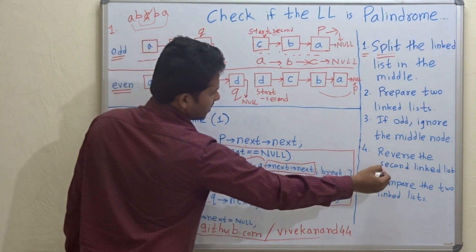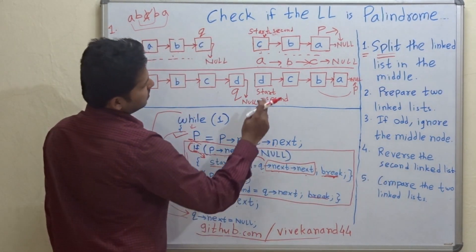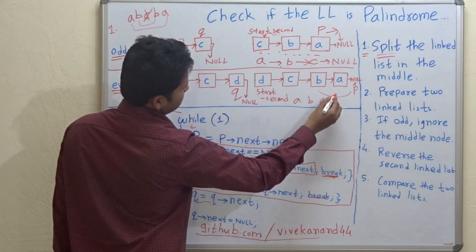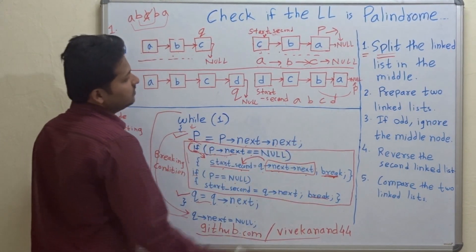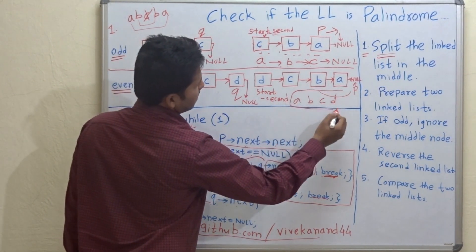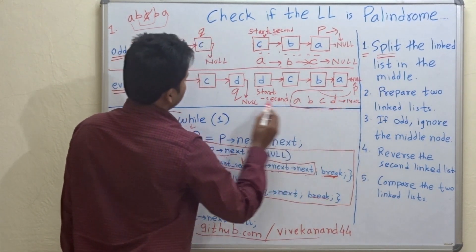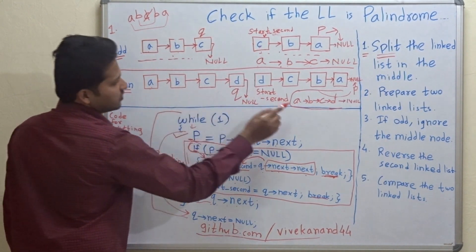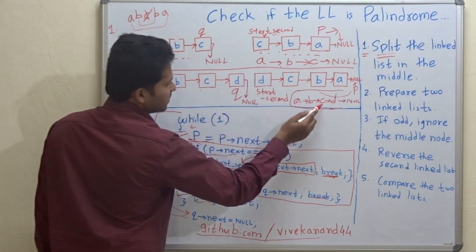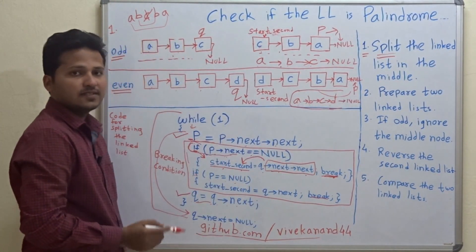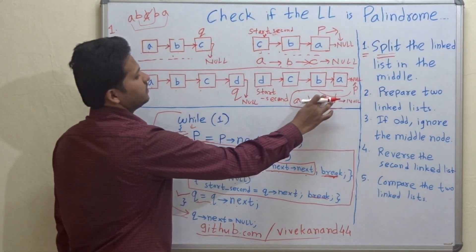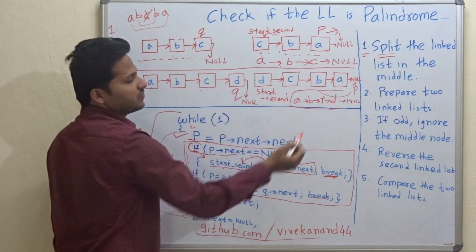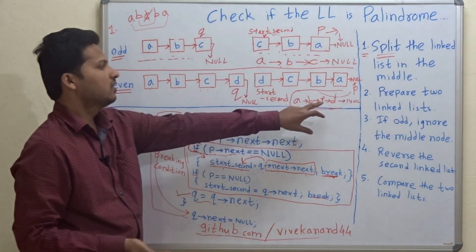Then we reverse the second linked list, which becomes A, B, C, D. We compare the two linked lists: A is matched with A, B is matched with B, C is matched with C, and D is matched with D — this is a palindrome. If, for example, there was an F instead, then C would not match with F, so it would not be a palindrome.